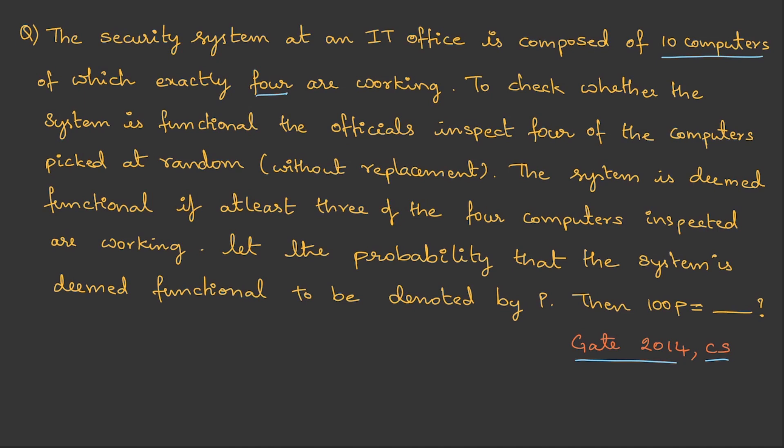To check whether the system is functional, the officials inspect 4 of the computers picked at random without replacement. The system is deemed functional if at least 3 of the 4 computers inspected are working. Let the probability that the system is deemed functional be denoted by p, then 100 p is.